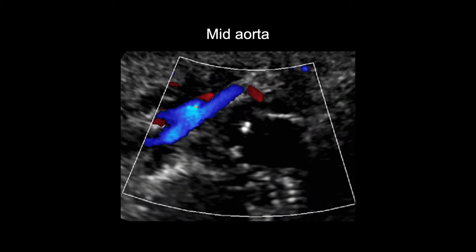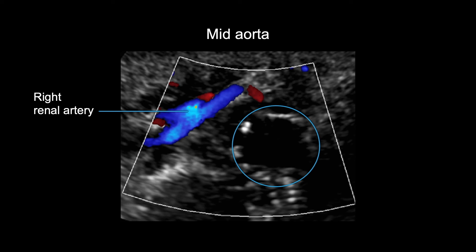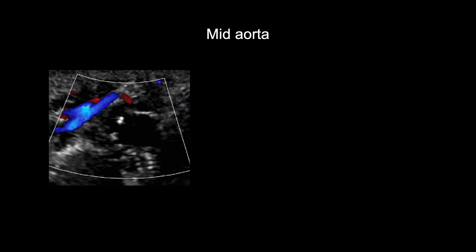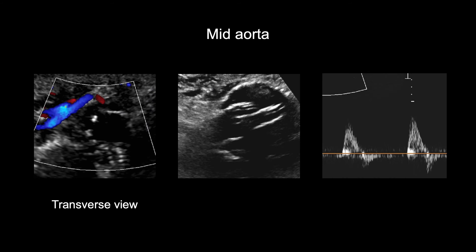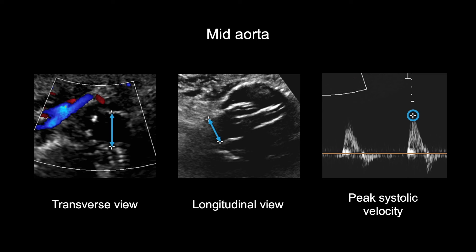Just distal to the renal arteries in the mid-aorta, you can see echogenic or bright lines along the aorta walls. This is the proximal attachment of the endograft body. In transverse and longitudinal views, obtain the diameters and waveform peak systolic velocity in the proximal endograft body.